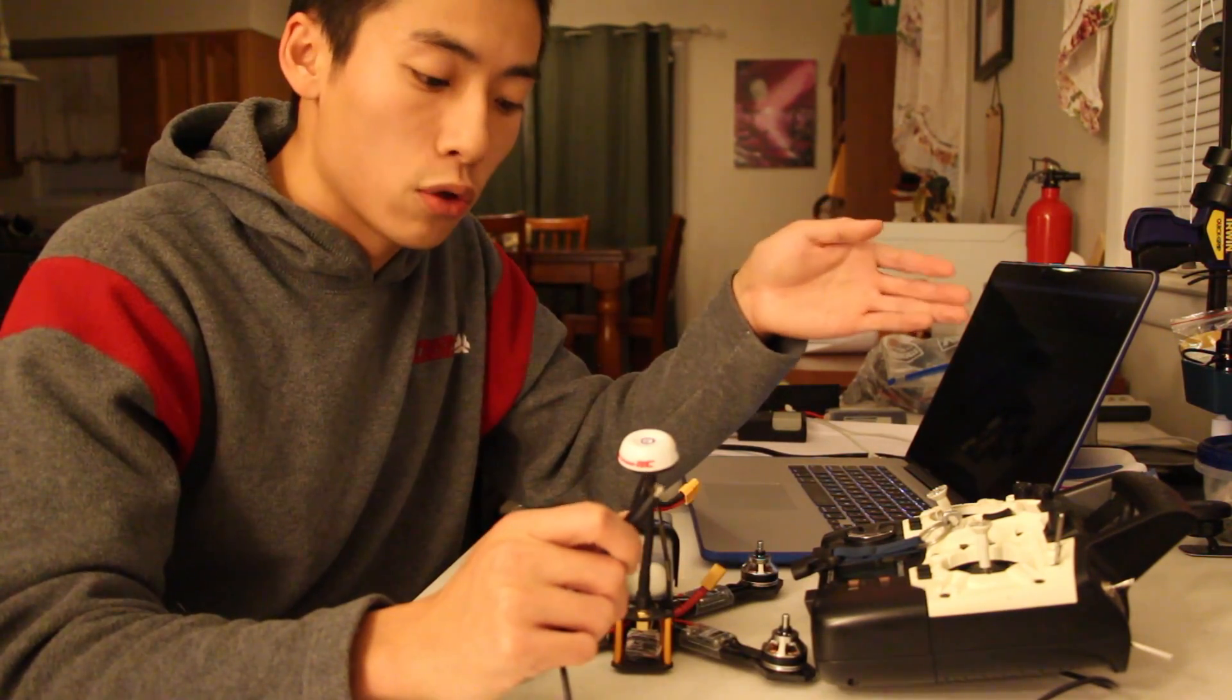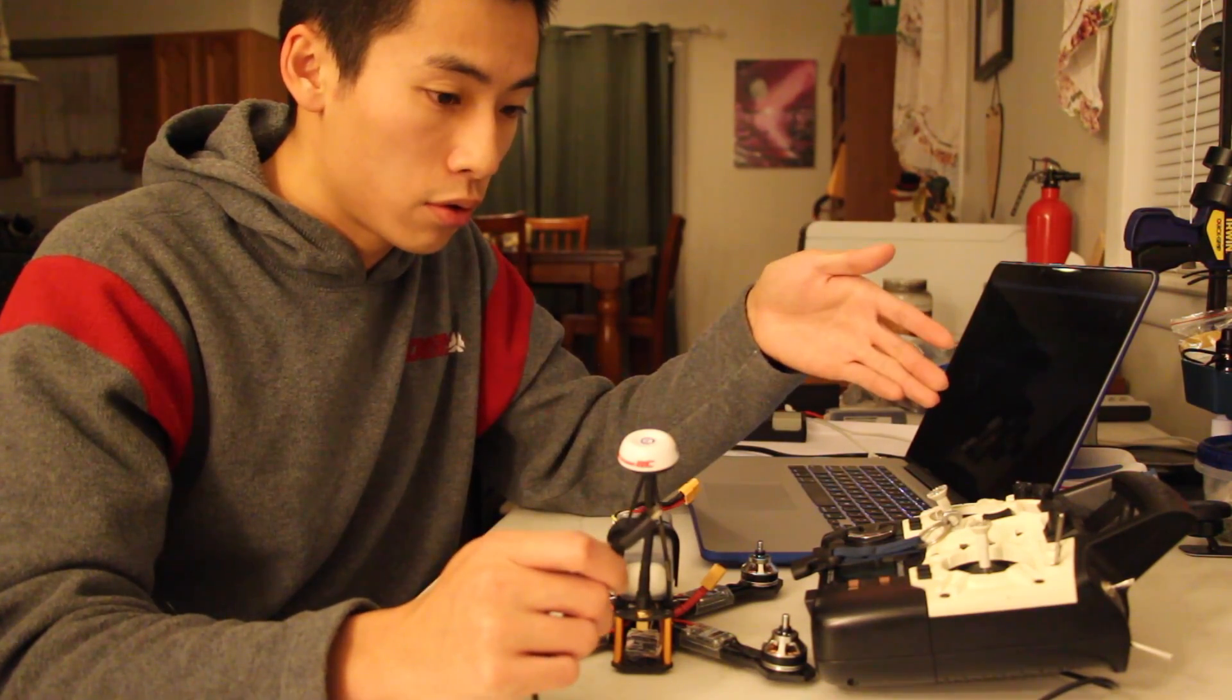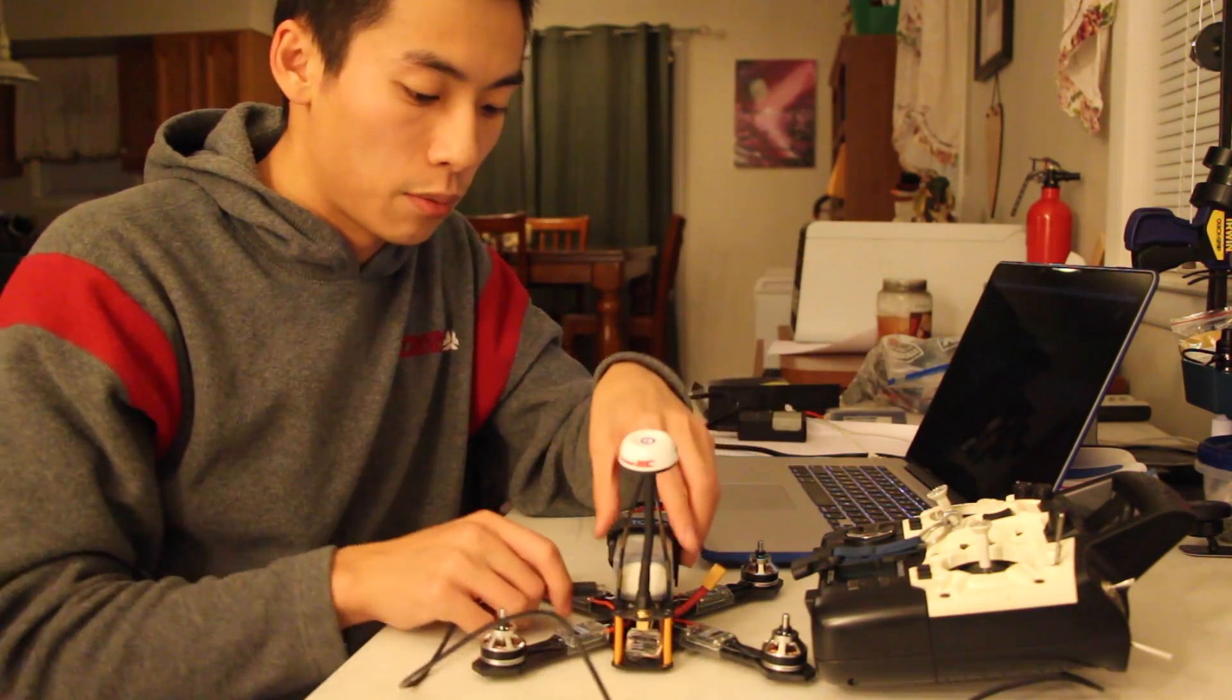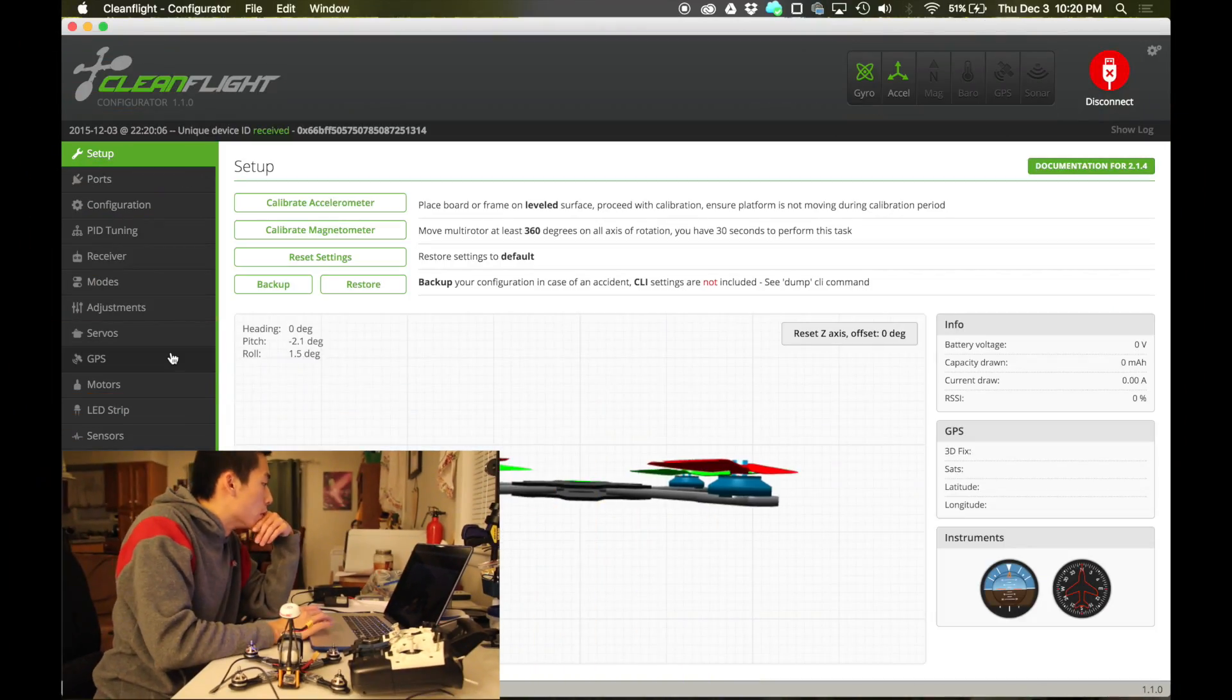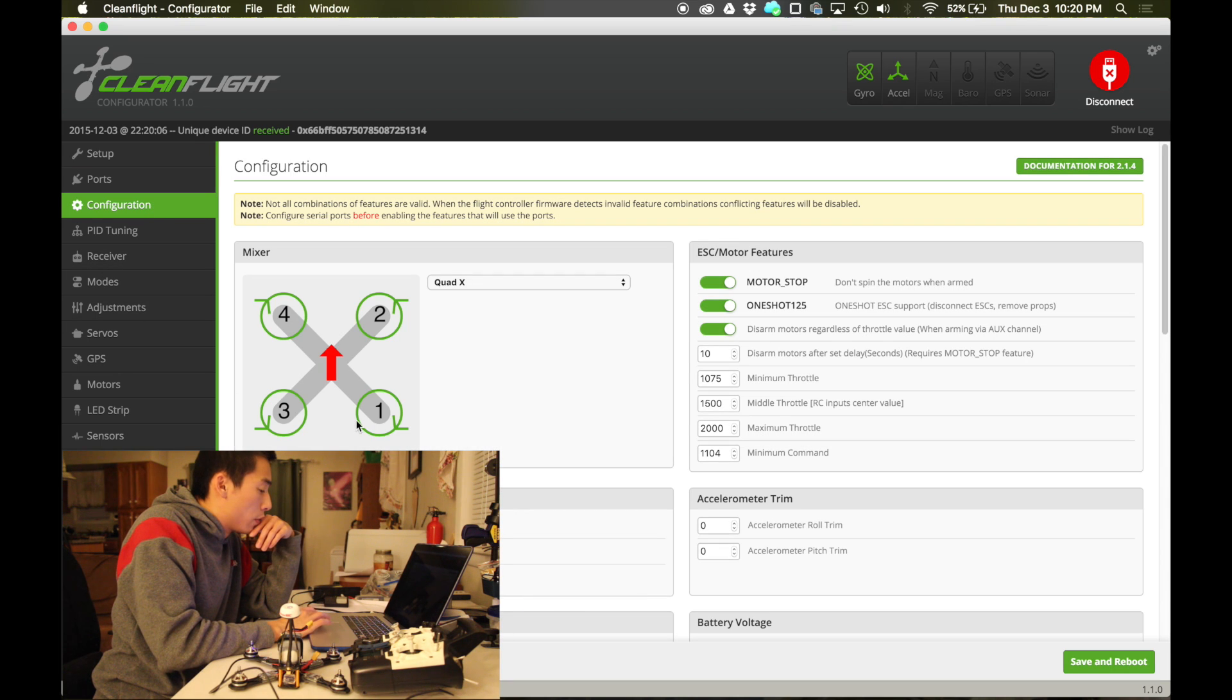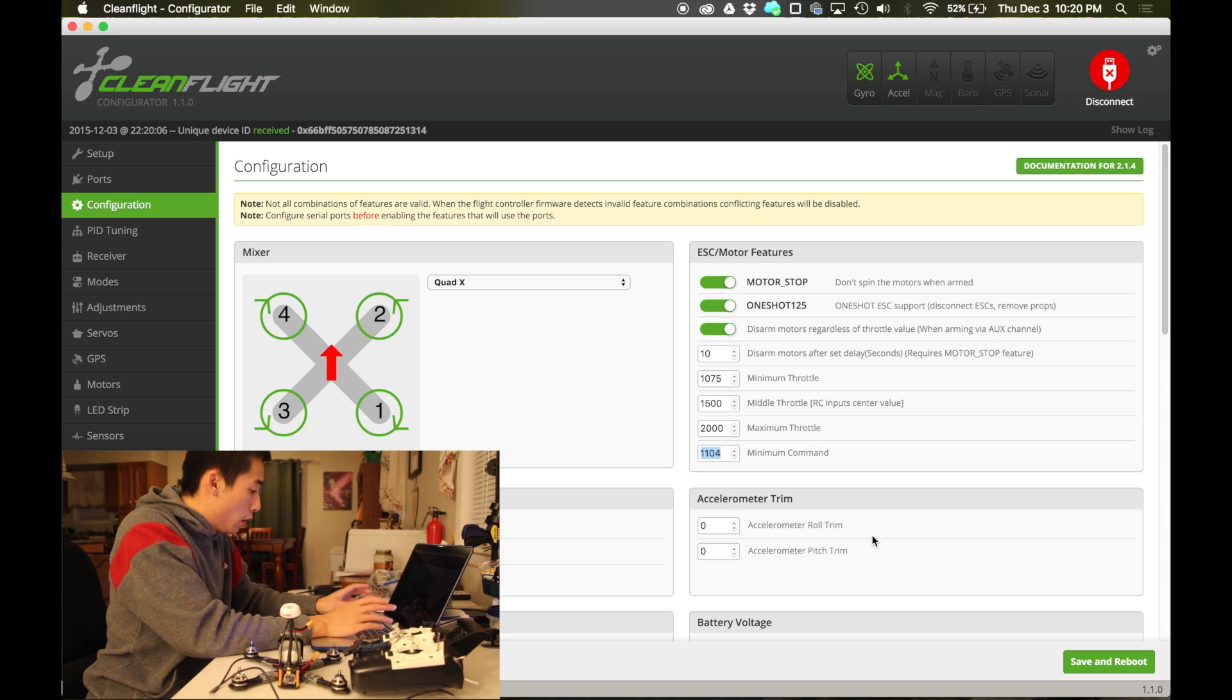To do a proper speed controller calibration, we'll need the quad with no props, transmitter, and connect it to the computer. Over here on Clean Flight, we'll go over to the configurations. Make sure that minimum command we're going to set to the minimum throttle of your transmitter. So how you can find that out is, let's come over here.